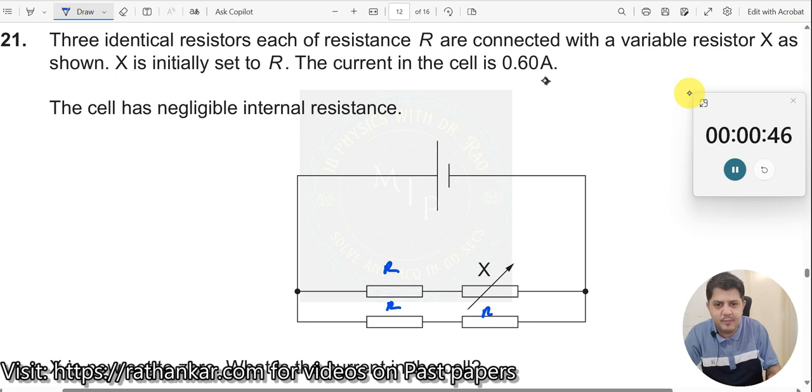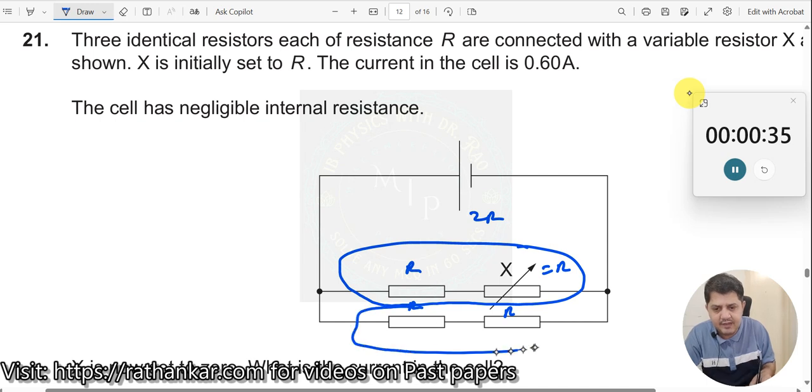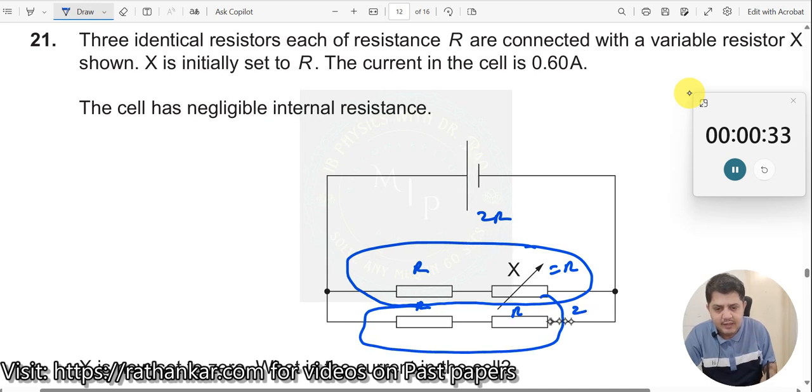The current in the resistor is 0.6 amperes. Now if I put X equal to R here, what will be the effective resistance? Here this will have a resistance equal to 2R and this will also have a resistance equal to 2R, which means 2R and 2R would be parallel to each other.